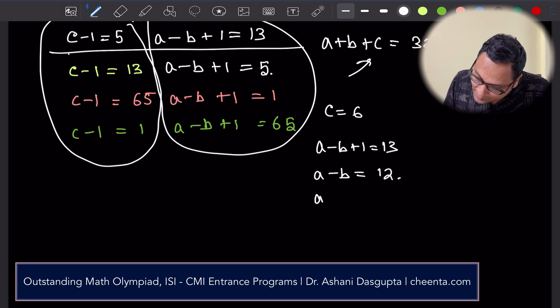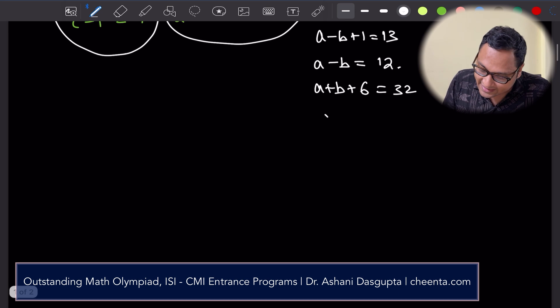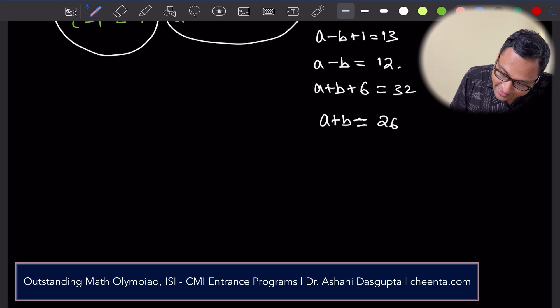If I replace c here I'll get a + b + 6 equals 32, or I'll get a + b equals 26.